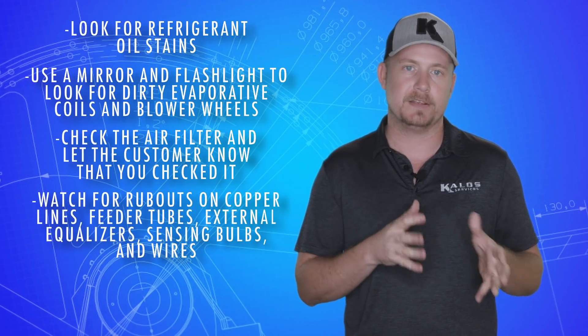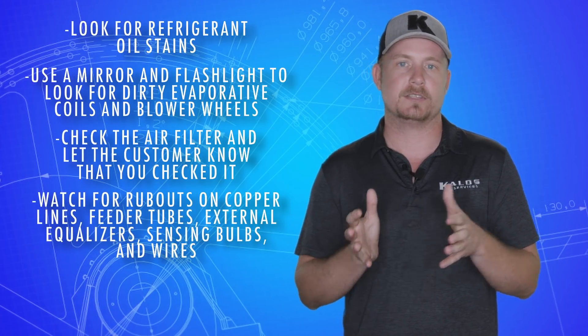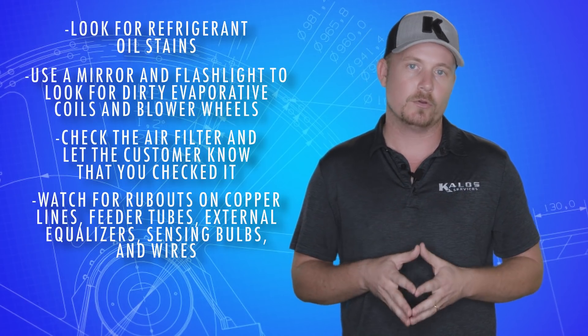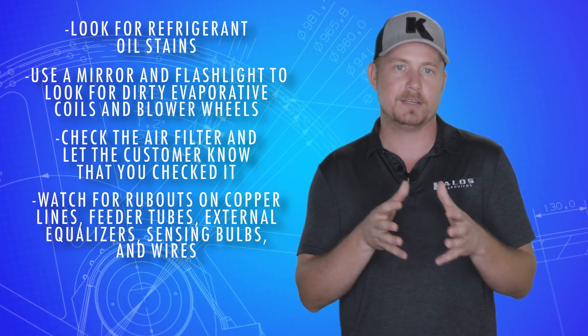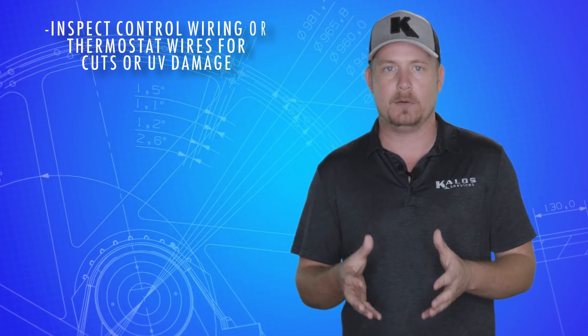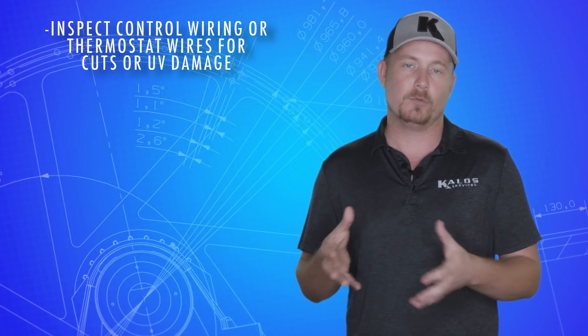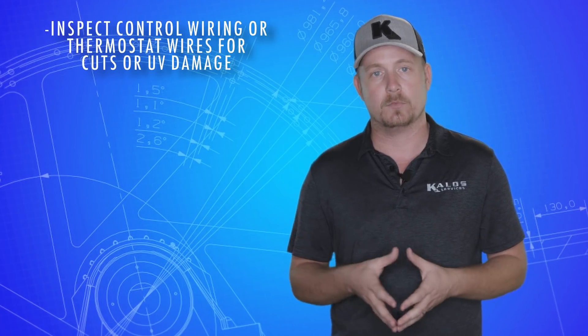Watch for rub outs on copper lines, feeder tubes, external equalizers, sensing bulbs, and wires. You can often find or prevent a problem just by looking for areas of contact between tubes and or wires. Inspect control wiring or thermostat wires for cuts or UV damage outside. If the weed whacker doesn't get the wire, often the sun will.